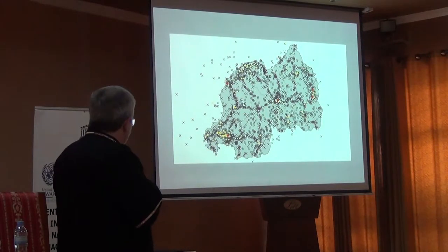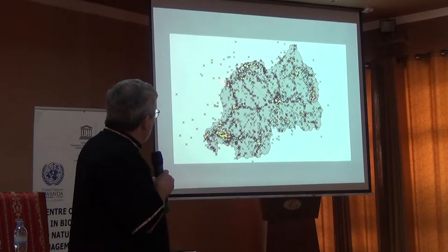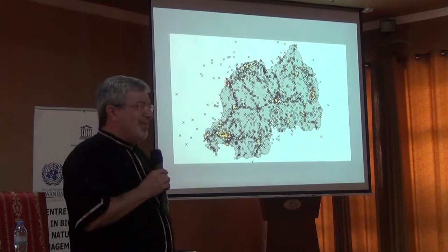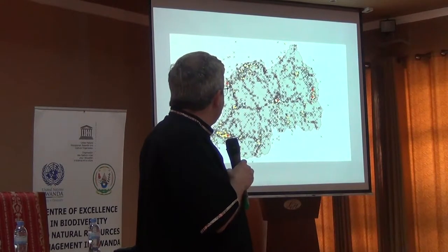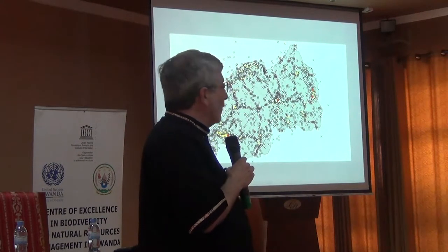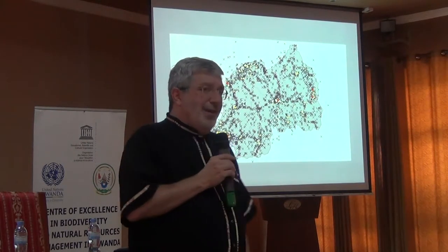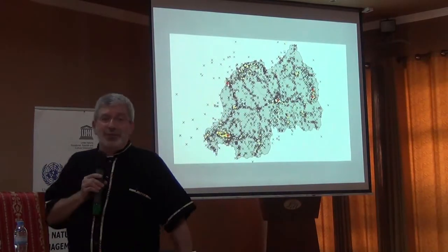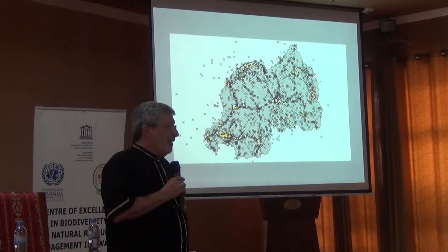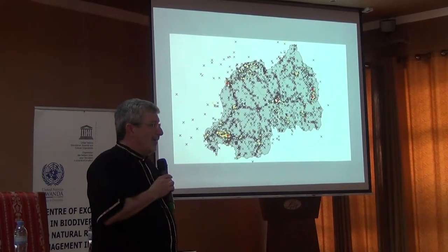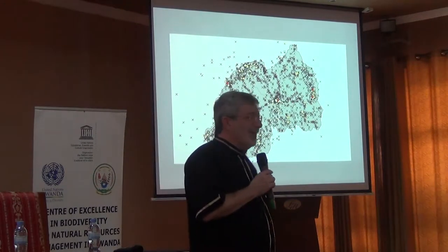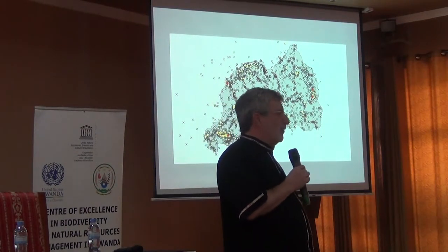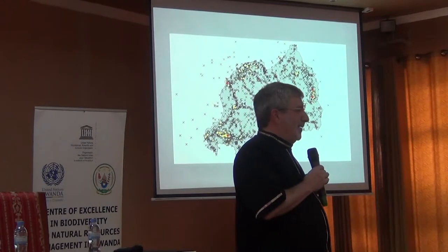In this map, I colored sites that have between 1 and 10 records with Xs, between 10 and 100 with white dots, between 100 and 1,000 with yellow dots, and above 1,000 records with red dots. Right away I want you to notice a bunch of things. Anybody know where the major roads are in Rwanda? This is my first time in Rwanda outside of the airport, but I can tell you what the major conduits of the road system look like.